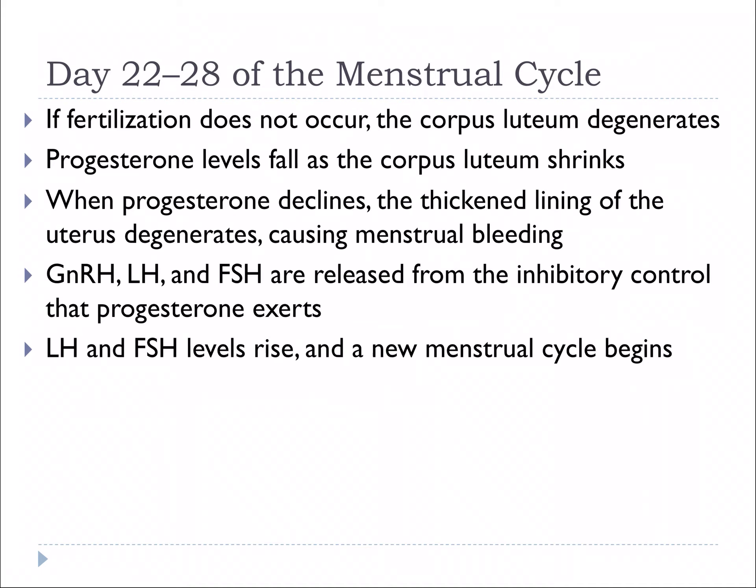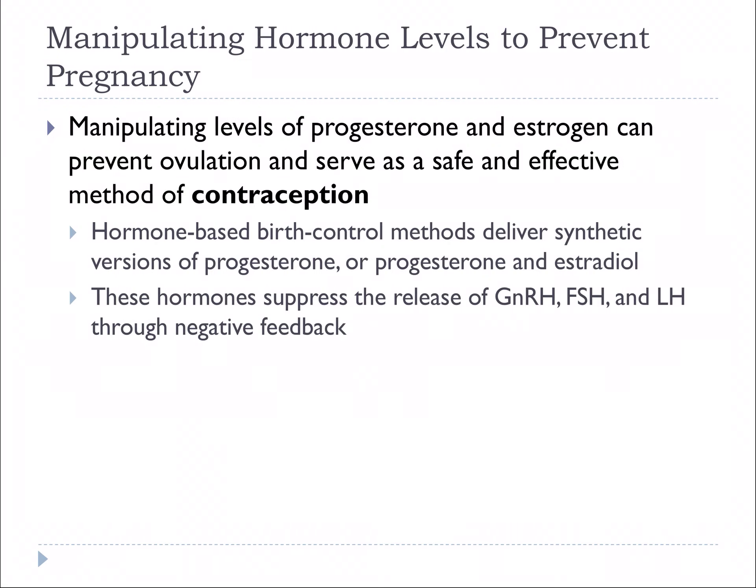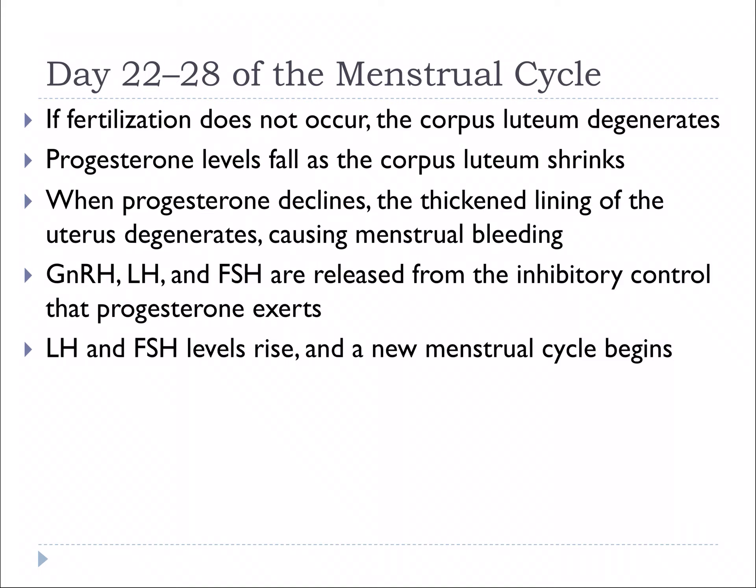If fertilization does not occur — and 99% of the time there's no sperm in the fallopian tube — the corpus luteum degenerates, it breaks down, and progesterone levels fall. When progesterone levels decline, we lose that lining of the uterus, causing menstrual bleeding at the end of the cycle. GnRH, LH, and FSH are released from the feedback control that progesterone exerts, those levels rise, and that triggers a new menstrual cycle to begin. This happens every single month.